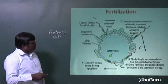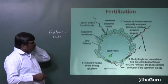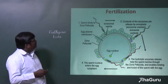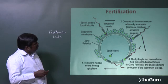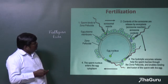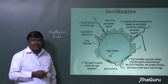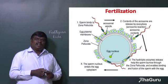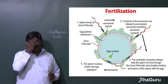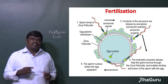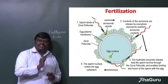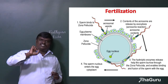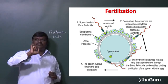This is the ovum, and in the fallopian tube the sperm moves inside. The sperm first binds with the outer membrane of the ovum, which is called the zona pellucida. Millions of sperms locomote, but only one sperm fertilizes the ovum — the sperm which touches it first is the one that fertilizes it.